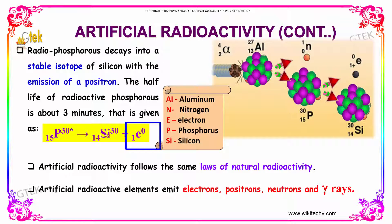Radio-phosphorus decays into a stable isotope of silicon with the emission of a positron. The half-life of radioactive phosphorus is about 3 minutes. Artificial radioactivity follows the same laws of natural radioactivity.